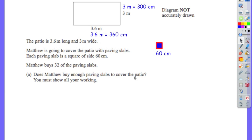This question comes quite early on in the paper. There's a lot of information here but the maths involved is not too difficult. The units of measurement are in metres for the patio and centimetres for the slab, so the first thing to do is change them all so they're the same.